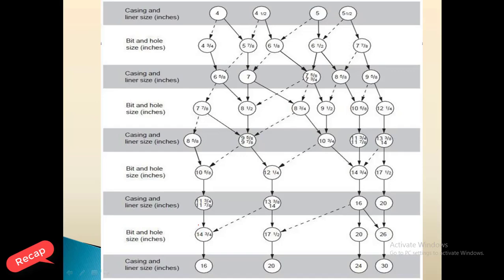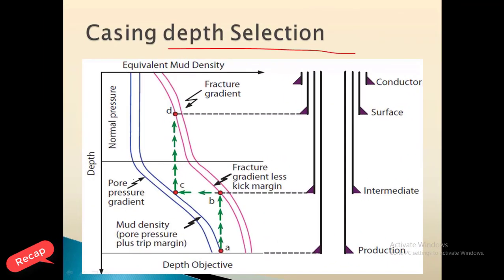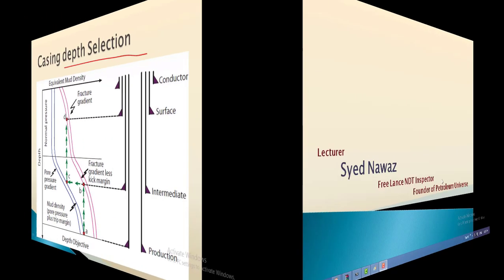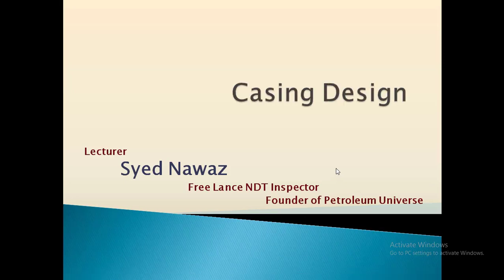Let us approach the first point, which is the selection of casing size. You have a fracture gradient and the pore pressure gradient — between these two gradients the whole mud plan is designed. In today's video we are going to see about the numerical approach to casing design.